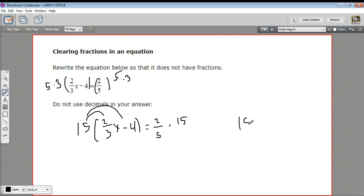So the first part of this problem is 15 times 2 thirds, and I can think of 15 as 15 over 1, times 2 thirds x. And when we multiply fractions, we multiply across the top, we multiply across the bottom. 15 times 2 is 30, 1 times 3 is 3. So that's 30 over 3, or 10x.